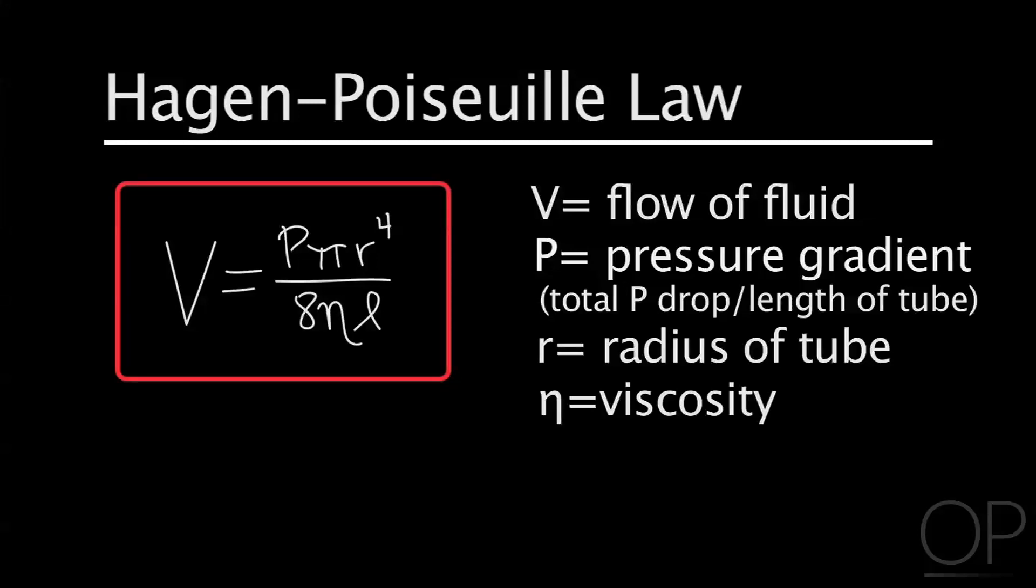The most important implication of this law is that halving the radius, for example, will decrease the flow rate to the fourth power, or 16-fold. Likewise, doubling the radius will increase the flow rate by 16-fold.